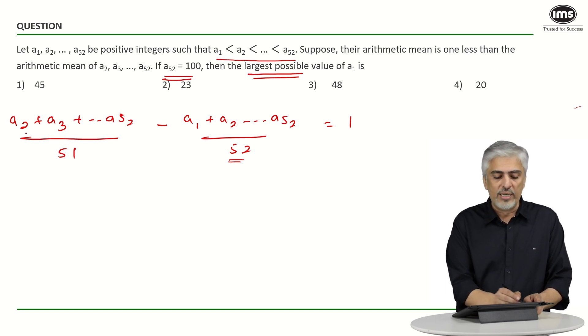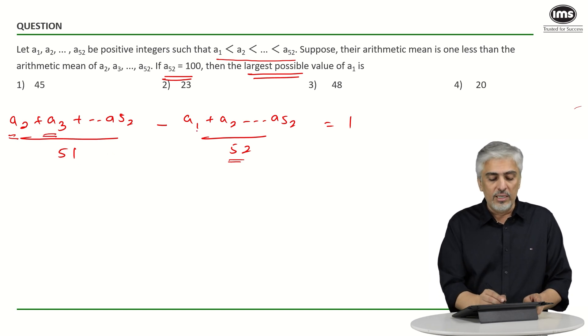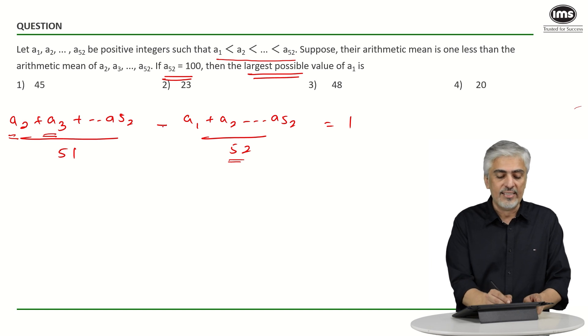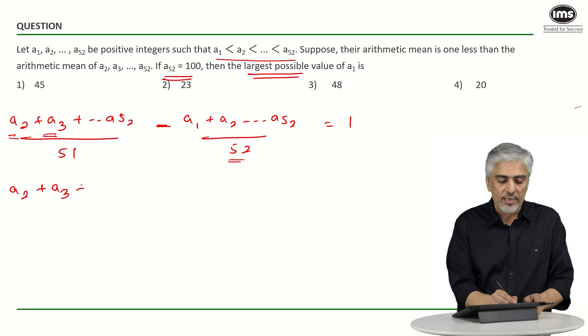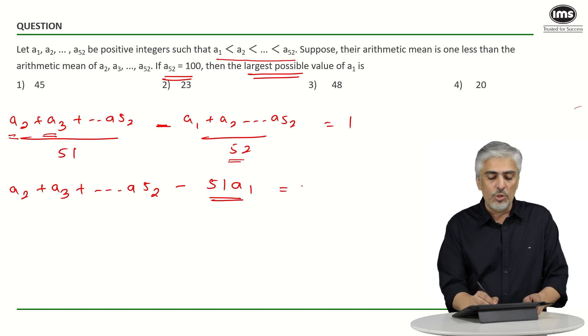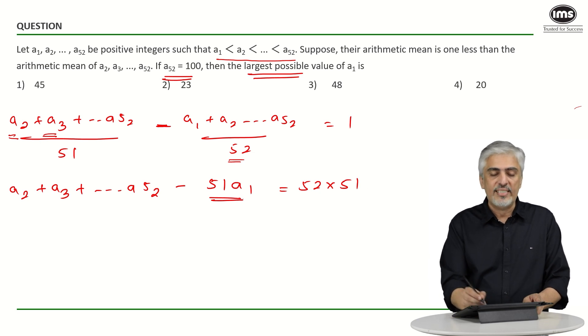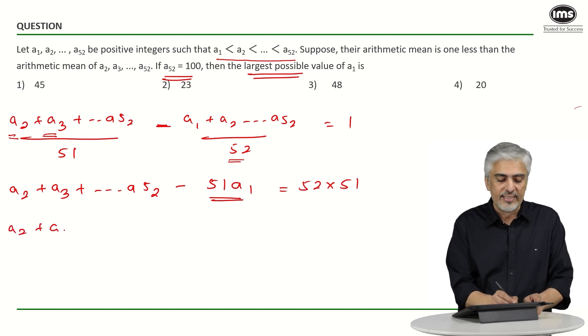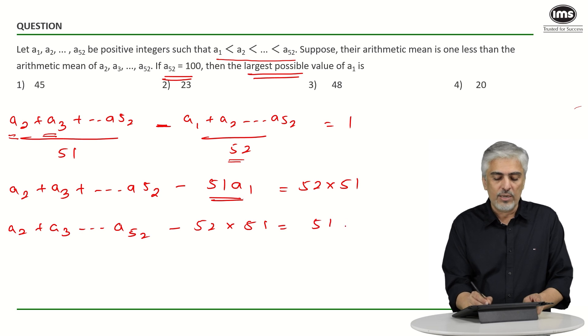Now if I take LCM, my LCM will be 51 into 52. If you look very carefully, you will get 52 times a2 over here, 52 times a3, 52 times every term. But here you will get 51 times all those same terms, and there is a subtraction between, which means I will be left with a2 plus a3 up till a52 minus 51 times a1, because this term does not cut out, will be equal to 52 into 51, right. I want to find a1, so let's take that on the right side. So I will be left with a2 plus a3 up till a52 minus 52 into 51 is equal to 51 a1.